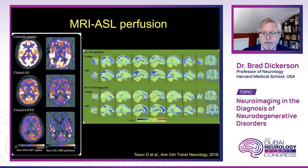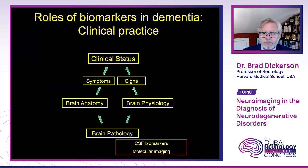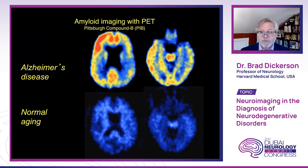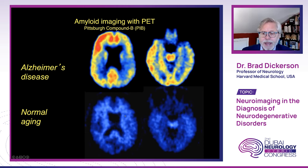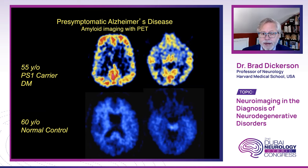Now let's turn to imaging biomarkers of amyloid and tau. Pittsburgh compound B came on the scene almost 20 years ago, with amyloid PET showing clear evidence of neuritic fibrillar plaque deposition in positive cases but an absence of signal in healthy older adults. Amyloid signal can be seen in pre-symptomatic Alzheimer's disease — as in a genetic presenilin mutation carrier who did not yet have symptoms but had a prominent amyloid PET signal.